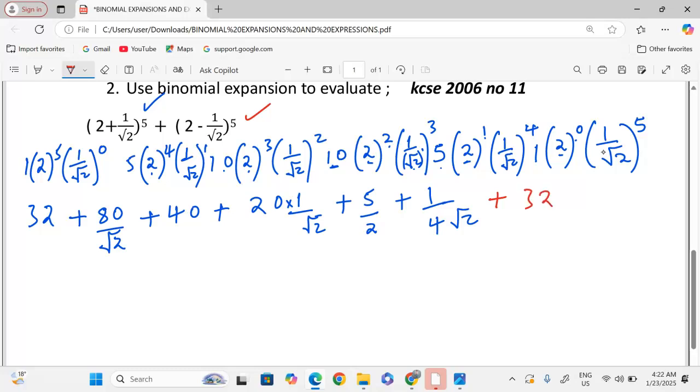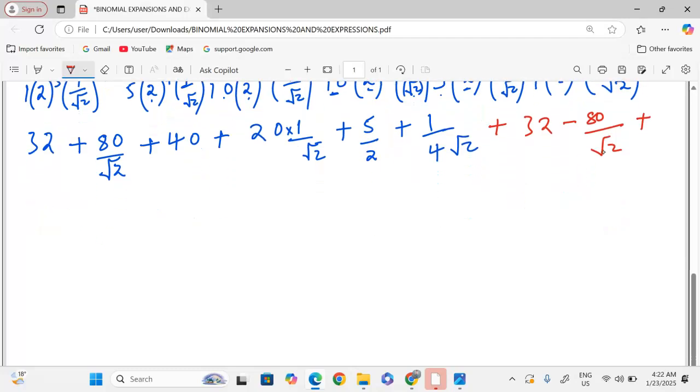32, but now minus 80 out of root 2. Plus 40. Minus 20 out of root 2. Then, now we add 5 over 2. Then, we subtract 1 over 4 root 2.